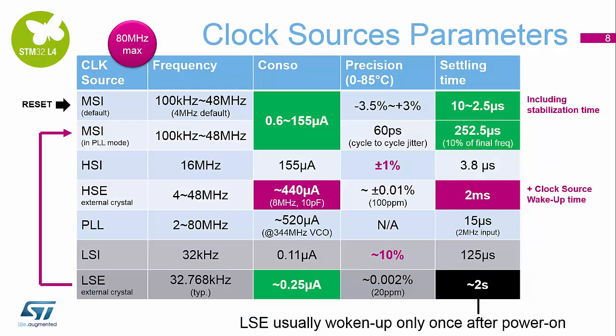Clock sources for the STM32L4 are extensive. We have multiple different clocks available as input sources with various parameters that can be set for each. By default, we will always start with the MSI clock — the multi-speed internal oscillator. This can go as slow as 100 kilohertz up to 48 megahertz. The default from reset is 4 megahertz. The precision of this clock source across the whole temperature range is plus and minus 3%, and the startup time is approximately 2.5 microseconds, which is why it is the default clock source.